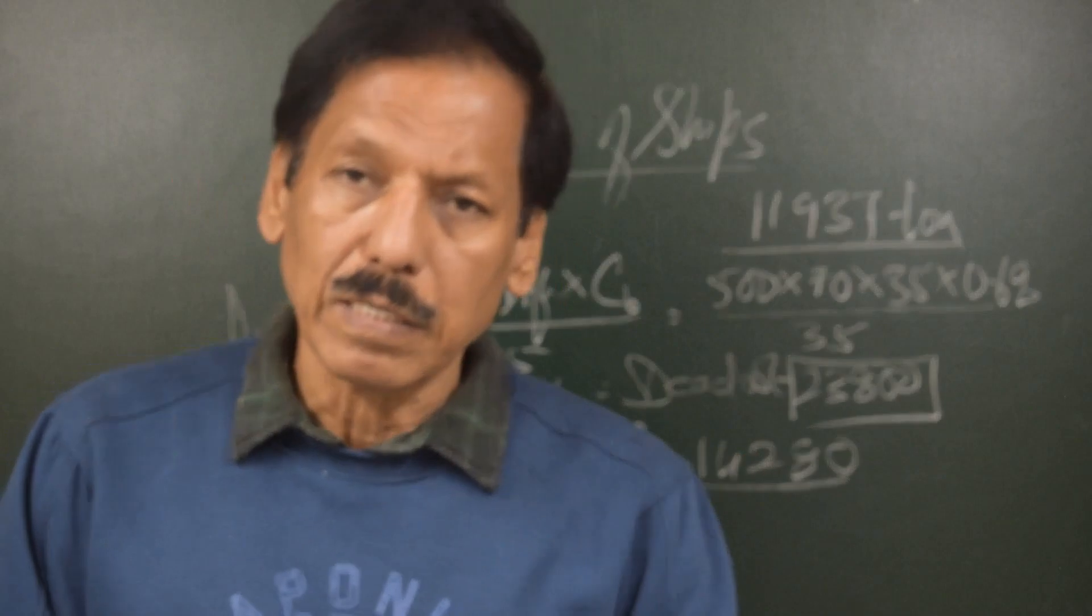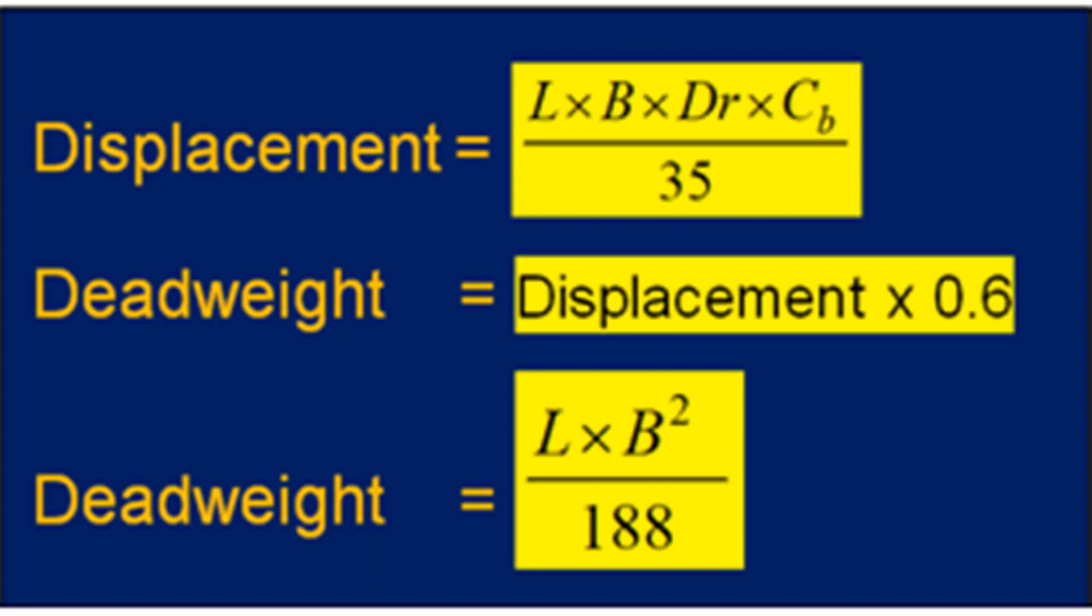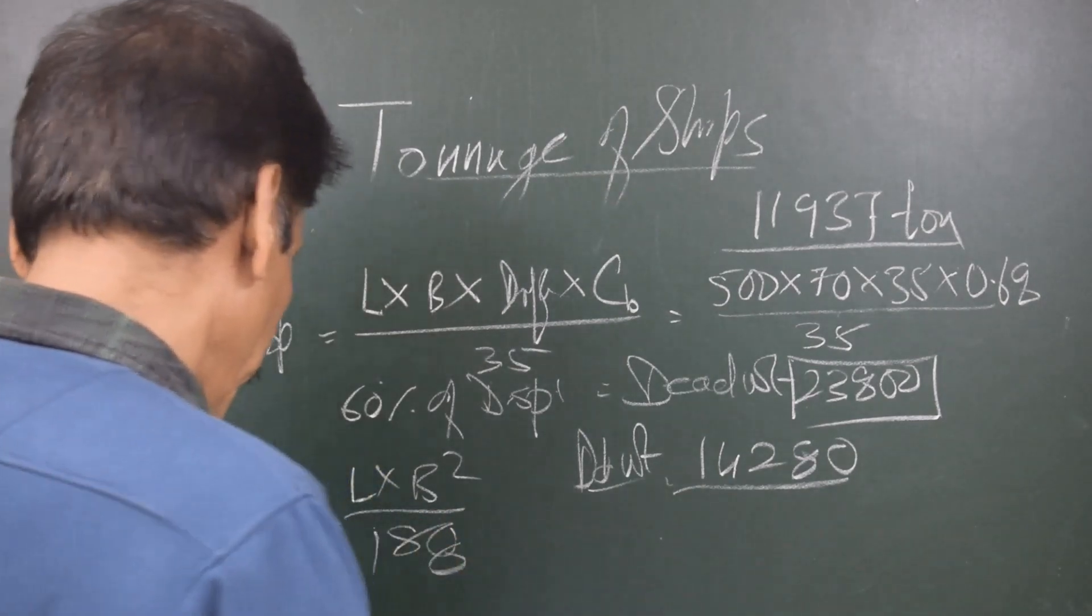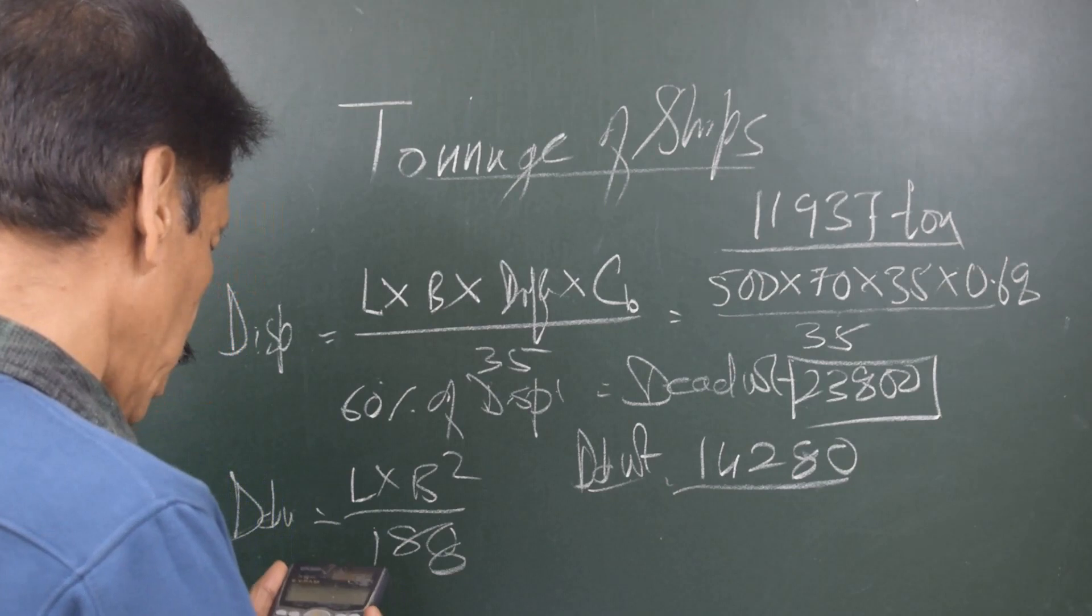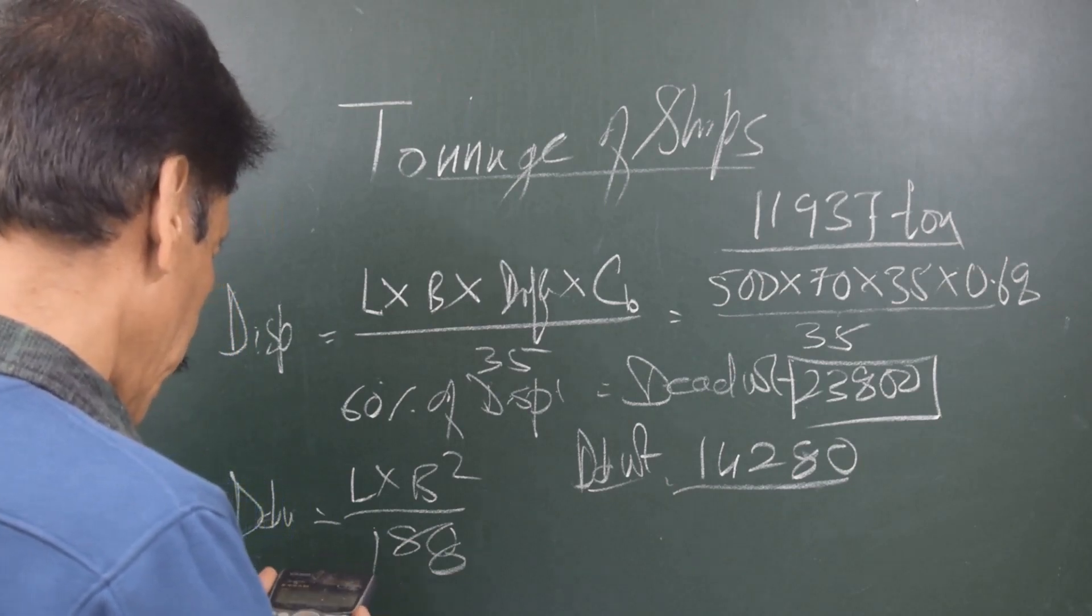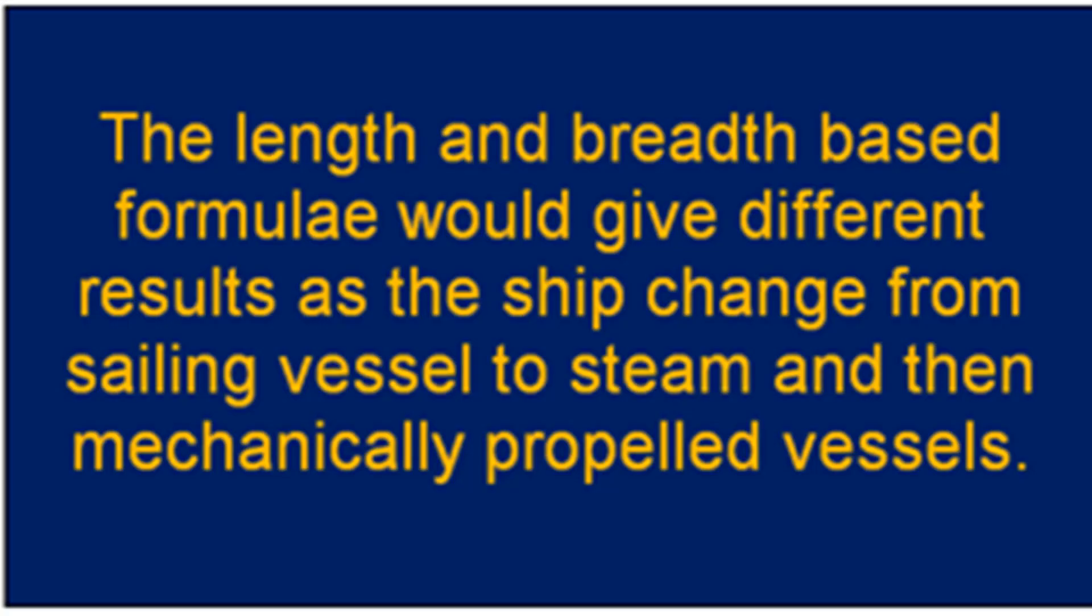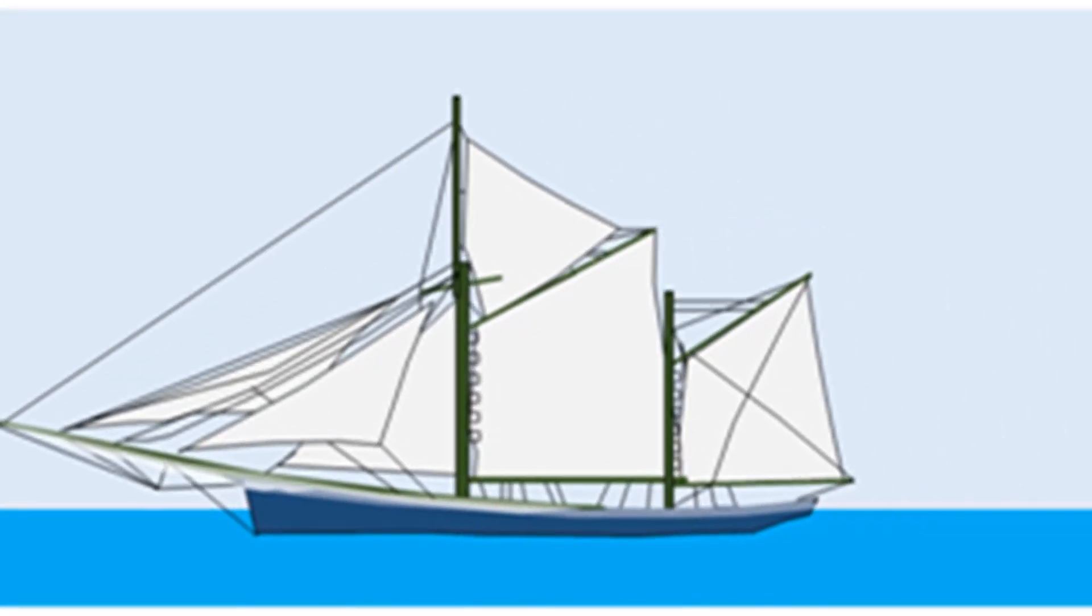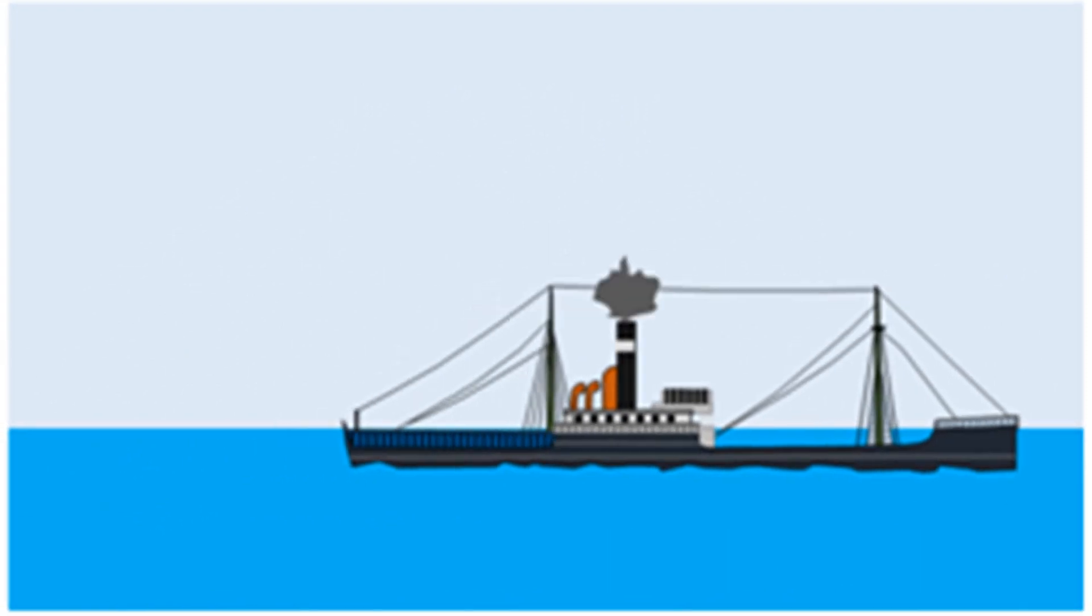So different methods gave different results as far as the carrying capacity is concerned. There was another method, that is length into breadth square divided by 188, giving you deadweight. So let us see, 500 once again into 70 into 70 equals divided by 188 gives me 13,032. So different empirical formulae giving different results, and on the basis of these figures they are going to calculate the charges that will be levied on the ship. So don't you think there should be uniformity in the method of calculation?